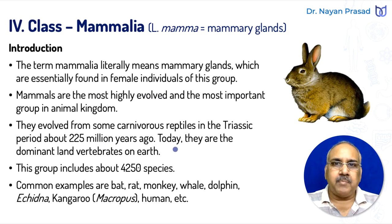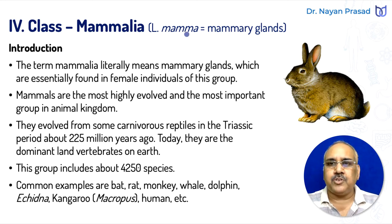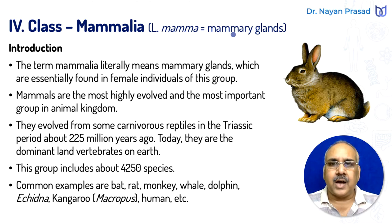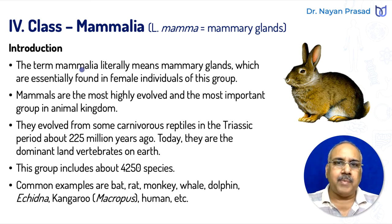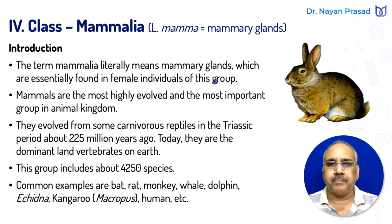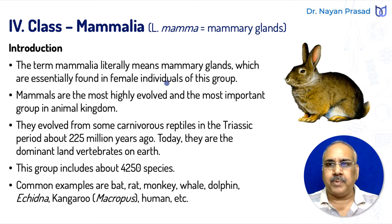Mammalia, the name taken from Latin language in which mamma means mammary glands. Mammary glands are those glands of the body which are functional in female individuals and these are milk producing glands. The term Mammalia literally means mammary glands, which are essentially found in female individuals of this group. The milk produced by these mammary glands is fed to their babies.